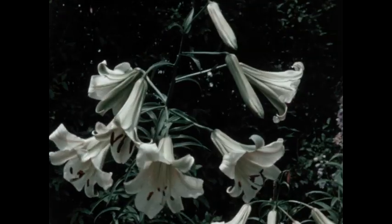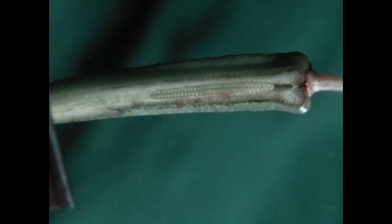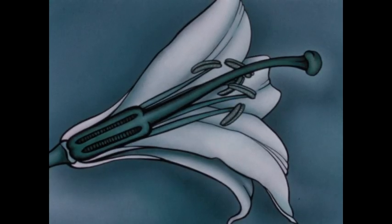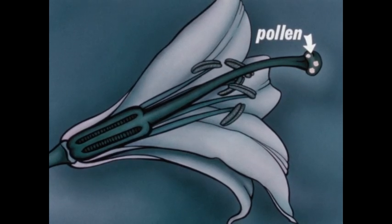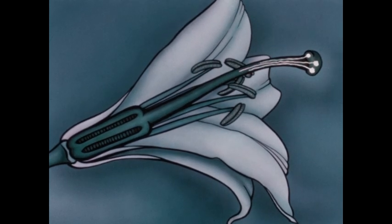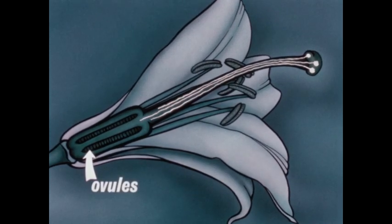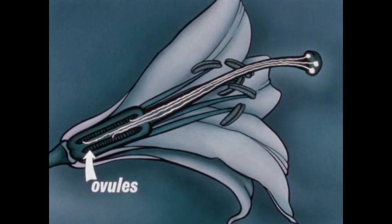The next step in producing a seed occurs inside the pistil. Cutting it open helps us see the inside. We can show what happens in a pistil once pollen has been deposited on the tip. From the pollen grains, tubes grow down the neck of the pistil toward the egg-shaped bodies in the base. These are called ovules. Eventually, the tubes reach the ovules and sperm cells from the tubes go inside. Each ovule may then grow into a seed. This is how seeds are produced in the lily.